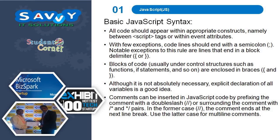Basic JavaScript syntax: all code should appear within appropriate constructs, namely between script tags or within event attributes. With few exceptions, code lines should end with a semicolon. Notable exceptions to this rule are lines that end in a block delimiter. Blocks of code — usually under control structures such as functions, if statements, and so on — are enclosed in braces.